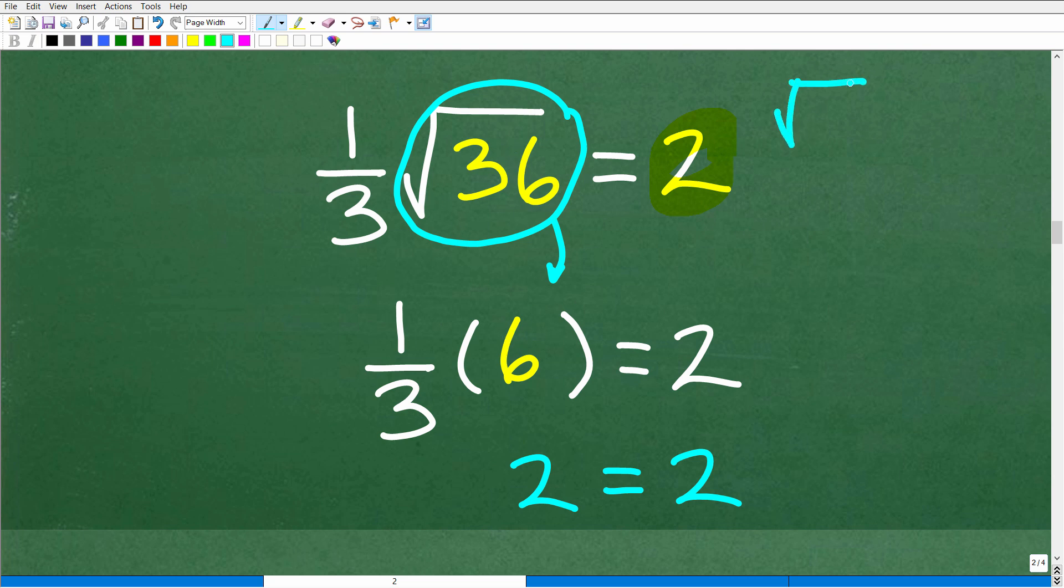When we're checking for extraneous solutions, you need to only use the principal square root. We're only going to consider the square root of 36 as positive 6. In other words, let me be more clear here. The square root of 36, a lot of you might say well the answer is both positive and negative 6, because positive 6 times positive 6 is 36, but negative 6 times negative 6 is also positive 36.